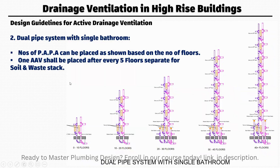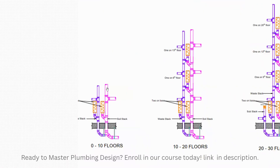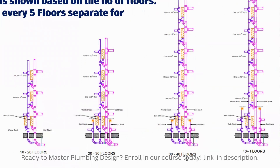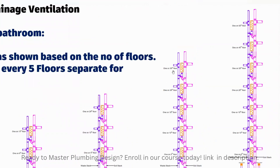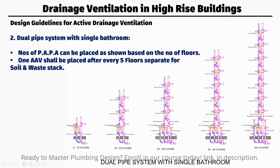For the dual pipe system, the same logic applies. The difference is there are two stacks — one for soil and one for waste. For example, for thirty to forty floors you need attenuators on the fifth floor, then tenth, fifteenth, twenty-fifth, and thirty-fifth. One air admittance valve shall be placed after every five floors, separately for the soil stack and the waste stack.